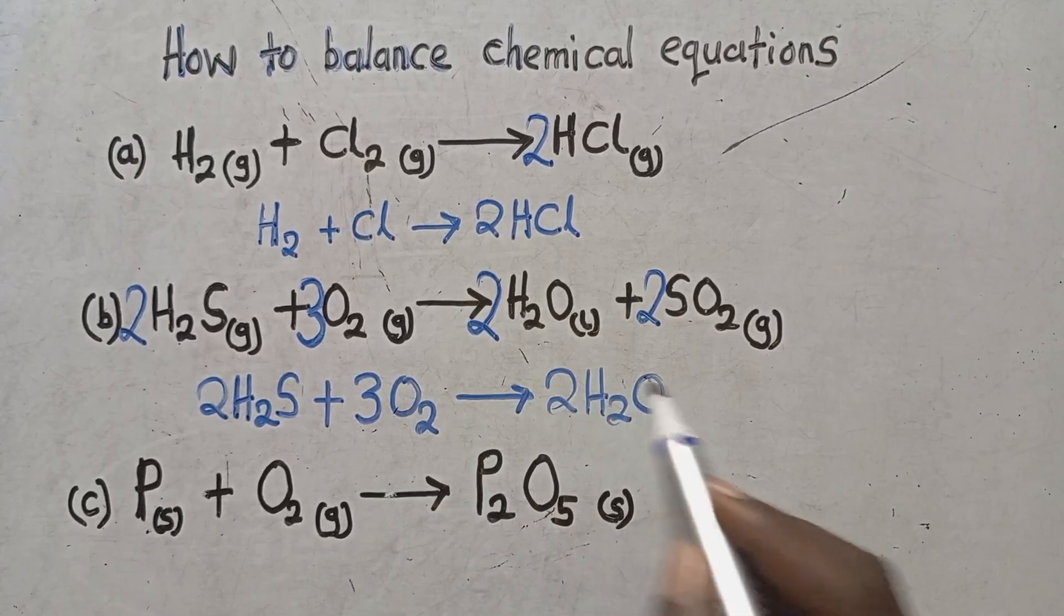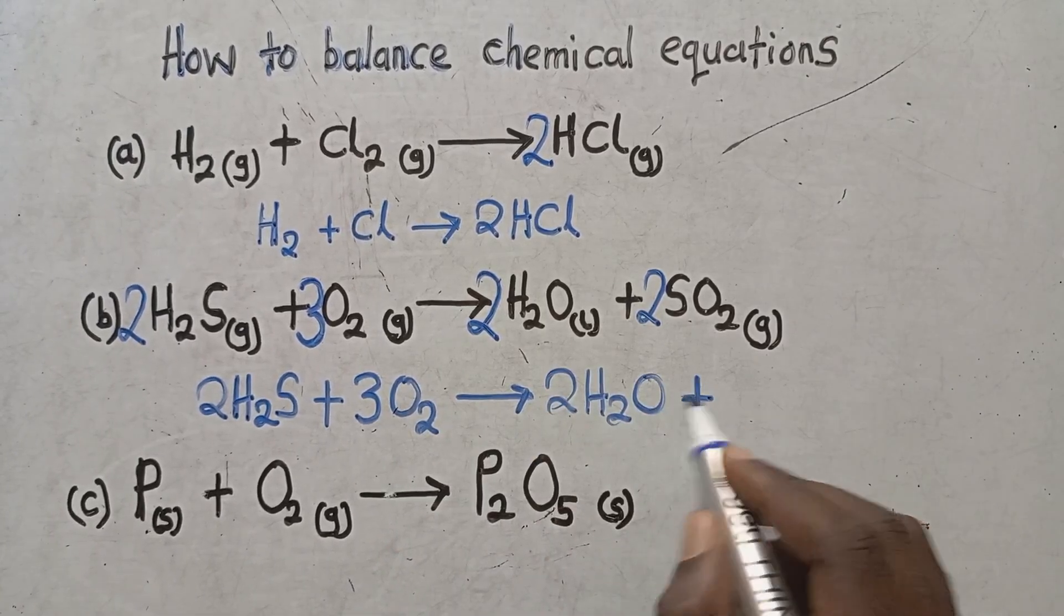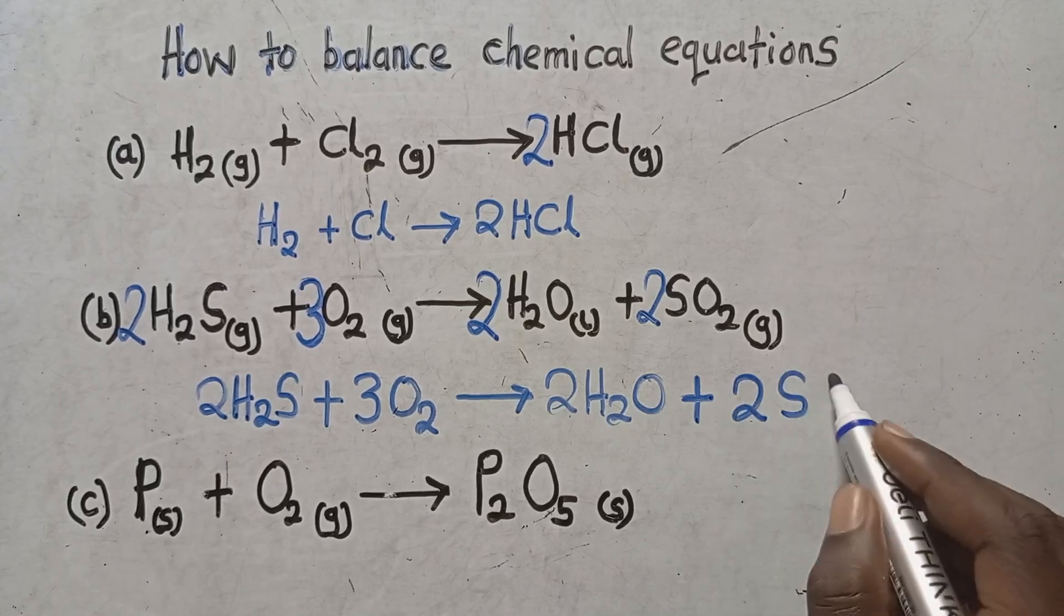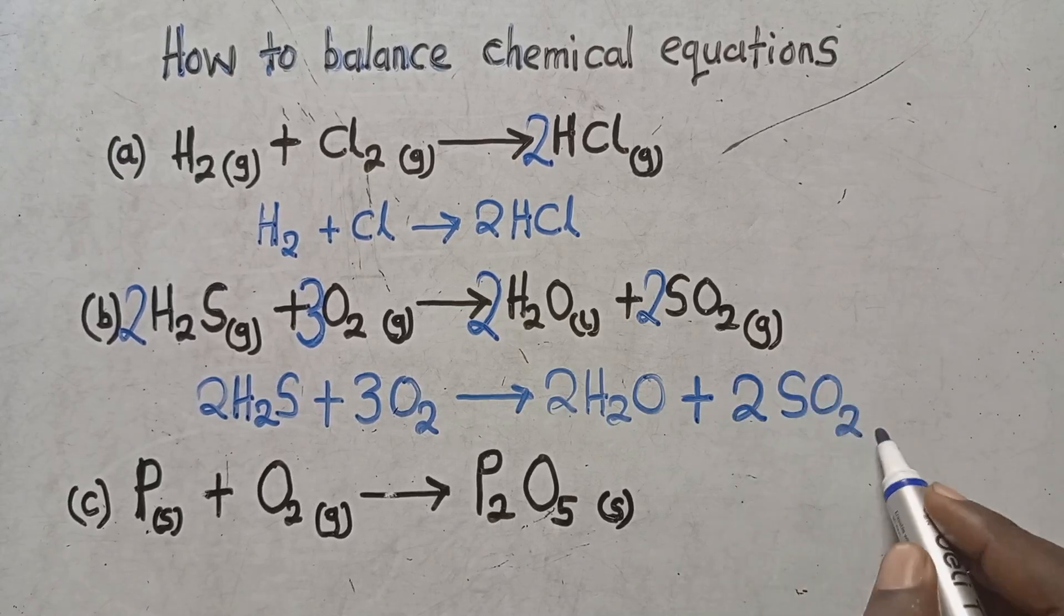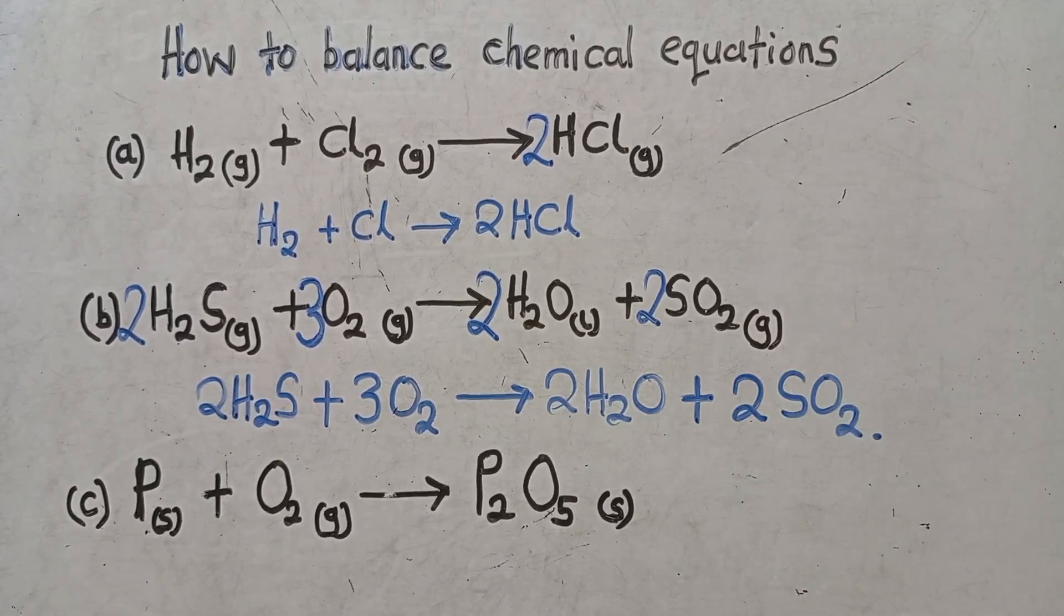It is two hydrogen sulfide plus three oxygen gas giving us two water plus two sulfur dioxide. Meaning this is now balanced. This is what you are supposed to do.